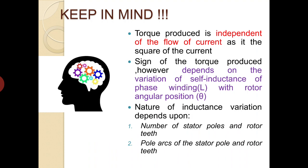The sign of the torque produced is independent of the direction of the flow of current, as the torque is proportional to the square of the current. The sign of the torque produced, however, depends on the variation of self-inductance of phase winding with rotor angular position θ. The nature of the inductance variation — whether positive or negative slope — depends on: (1) the number of stator poles and rotor teeth, and (2) the pole arcs of the stator pole and the rotor teeth.